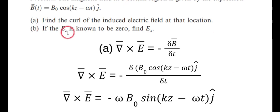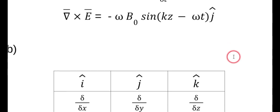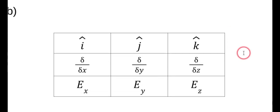Now the second part, if the Ez, so the z component of the electric field is known to be zero, find the Ex component of the electric field. What he wants you to do here is actually write out how to do a curl.